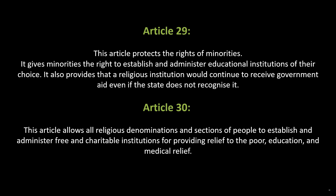Article 30 allows all religious denominations and sections of people to establish and administer free and charitable institutions for providing relief to the poor, education, and medical relief.